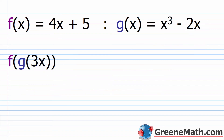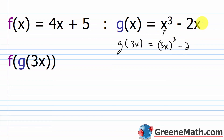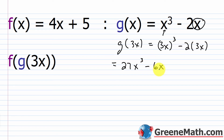Next: f of x equals 4x plus 5, and g of x equals x cubed minus 2x. We want f of g of 3x. Start with g of 3x: plug in 3x for x. You'd have 3x cubed minus 2 times 3x. Now 3x cubed means 3 cubed times x cubed. 3 cubed is 27. And 2 times 3 is 6, so 6x. So g of 3x equals 27x cubed minus 6x.